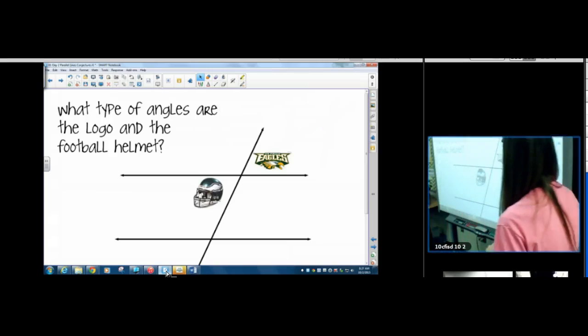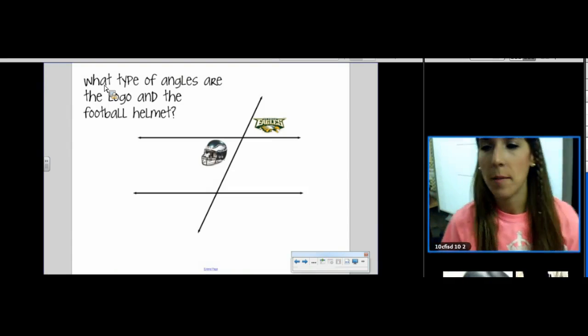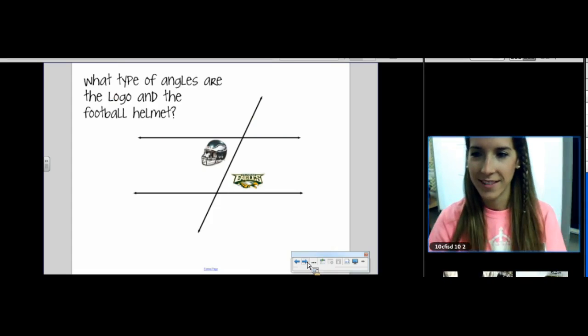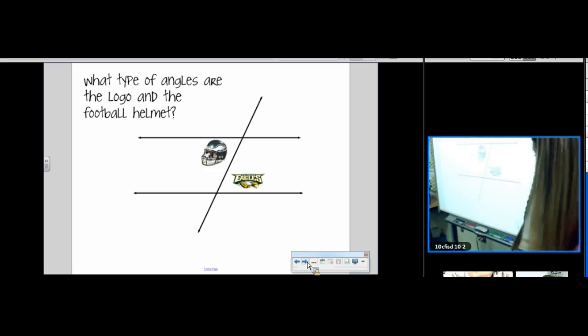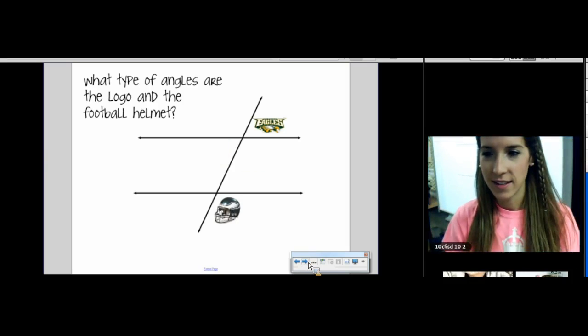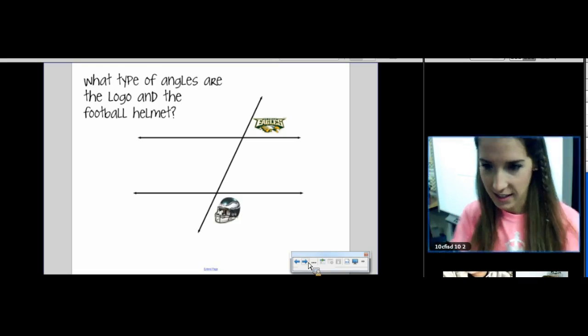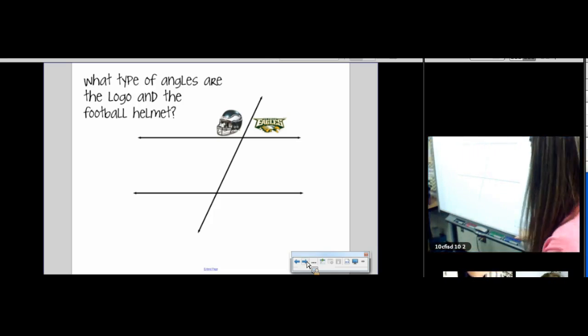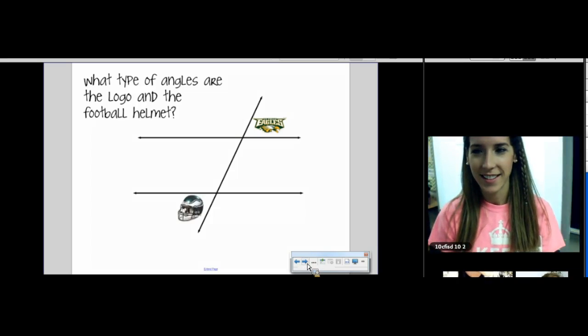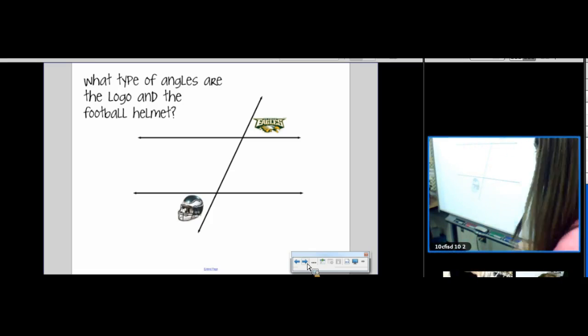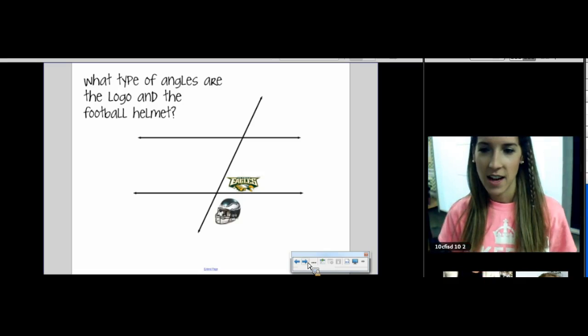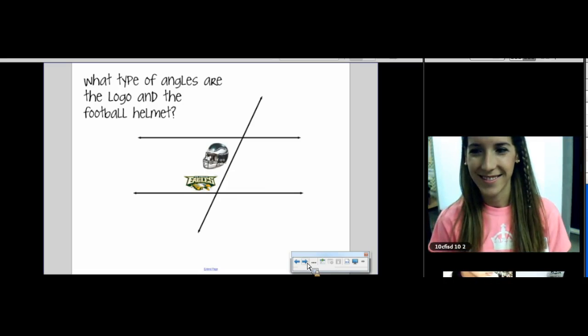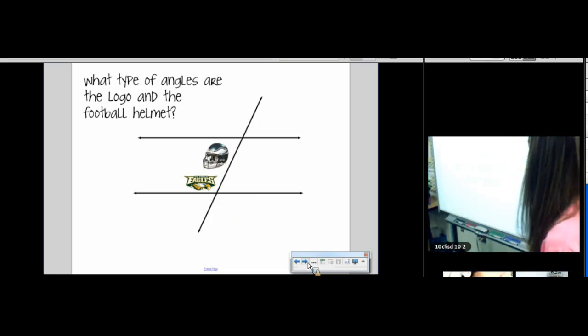Alright, the eagle logo and the helmet are vertical angles. Eagles, yes. Okay, eagle helmet and logo. Alternate interior. Eagles and helmet, same side, exterior. Linear pair. Eagles and helmet. Linear pair. Eagles and helmet. Alternate exterior. Very good. Eagles and helmet. For some reason students struggle with these linear pairs. But yes, linear pair, very good. Eagles and helmet. Same side, interior. And there we go.